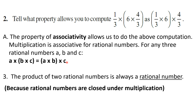Let me give you a simple example: 2 into 3 into 4. If you do 2 times 3 first, you get 6, and 6 into 4 is 24. If you do 2 into 4 first, you get 8, and 8 into 3 is 24. If you do 3 into 4 first, you get 12, and 12 into 2 is 24. So out of 3 numbers, you can pick any 2 to multiply first, then multiply the product with the third — you will get the same result. This property is known as associativity.